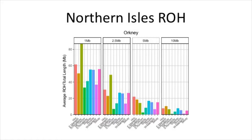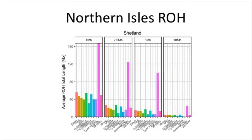Zooming into Orkney and Shetland specifically, there's variation between different island groups. North Ronaldsay shows quite a lot of shorter ROHs, suggesting a bottleneck at some point in its history, but this pattern doesn't persist for longer ROHs — so this hasn't applied within the last couple of generations. Within Shetland — where the scale goes up to 160 — most of the elevated signal is driven by one particular cluster: Fair Isle, the most isolated island in the Northern Isles. This is representative across all length categories and reflects Fair Isle's small population size.